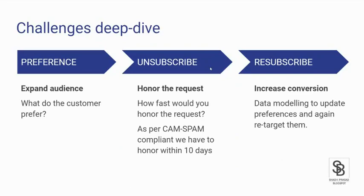So the challenge is: you all have explained preferences very well — expand the audience and understand their choices, and how you are going to start sending communications. With unsubscribes, you have to honor the request — it is the law. CAN-SPAM is for the US, and as per CAN-SPAM, you have 10 days to honor it. You can take your time up to 10 days. Obviously nowadays everything is real time, so the honor request should also be real time, but legally you have 10 days.